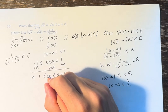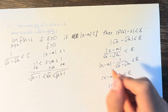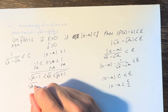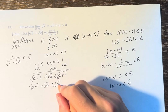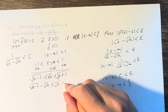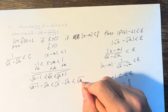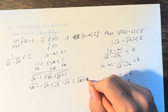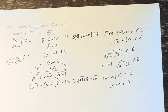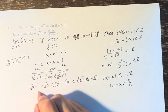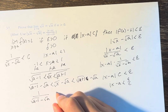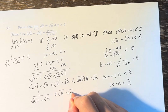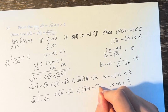Then we take the square root of all sides and subtract the square root of a. So √(a-1) minus √a is less than √x minus √a, which is less than √(a+1) minus √a.